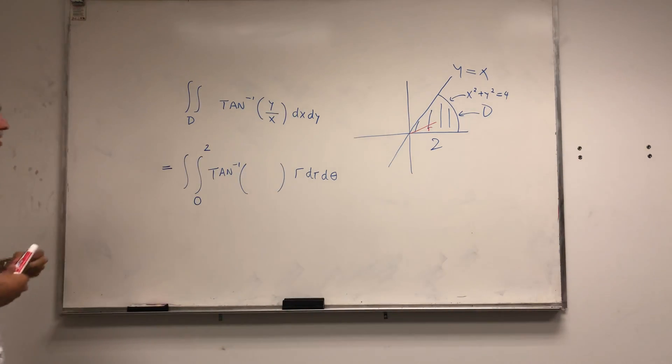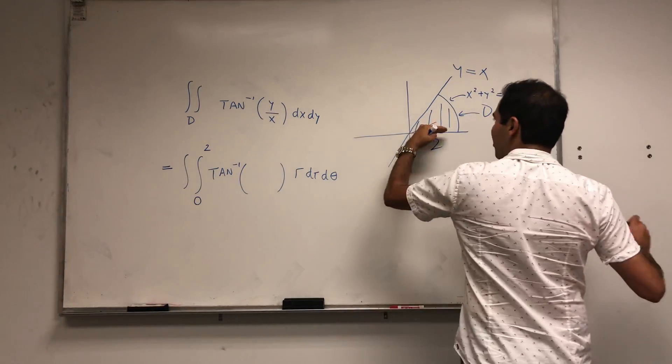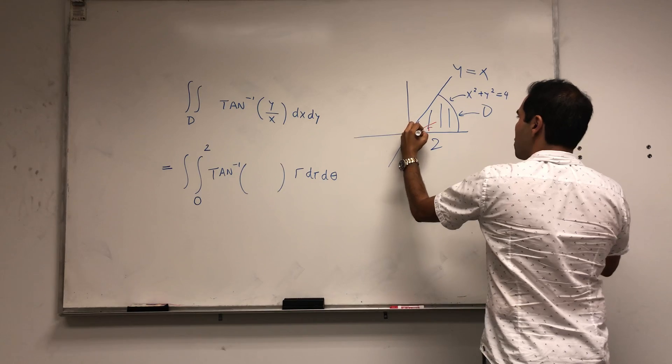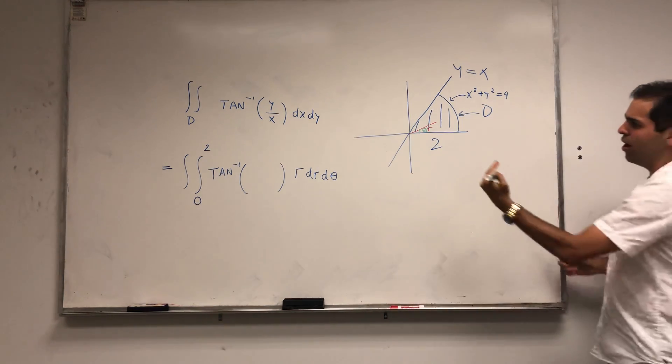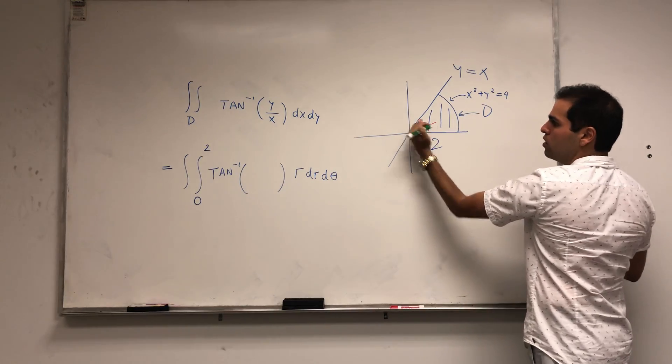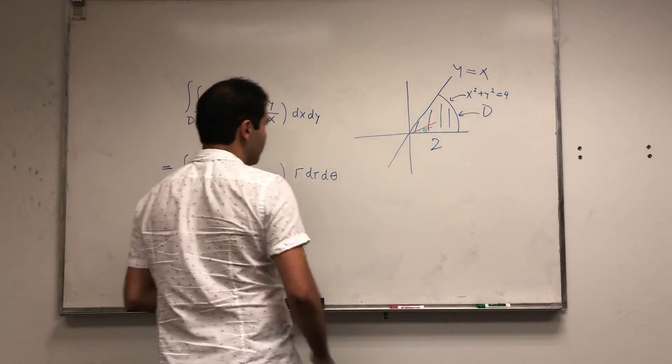So r is basically between 0 and 2. And next thing, let's try to determine the angle. So notice here we have the angle theta.